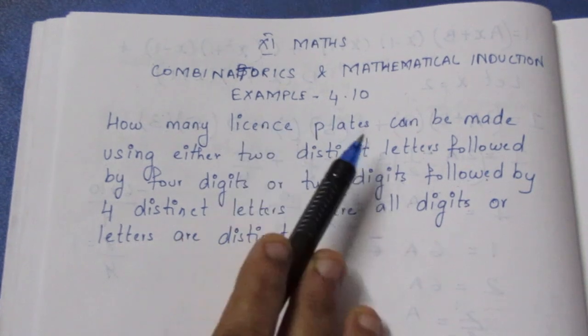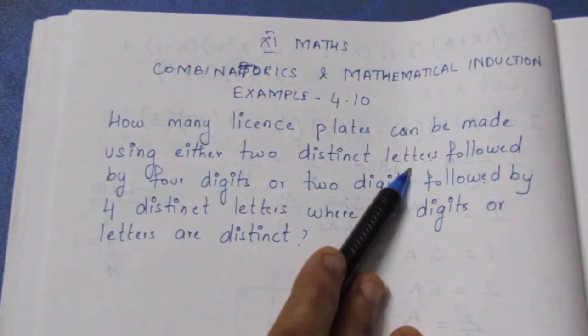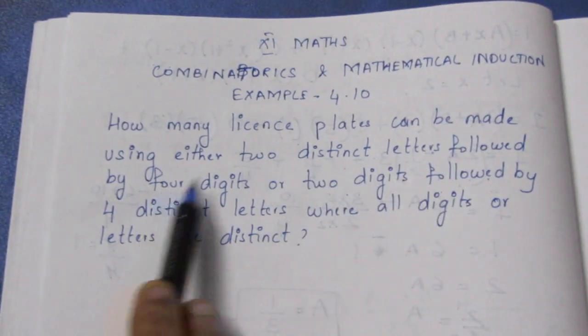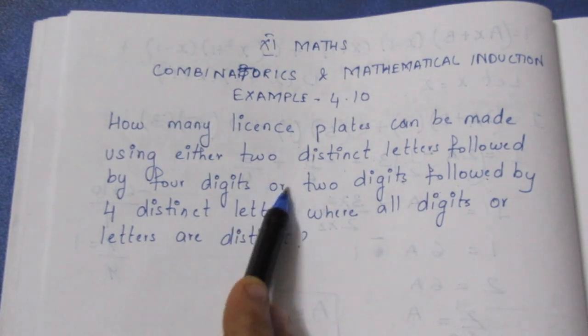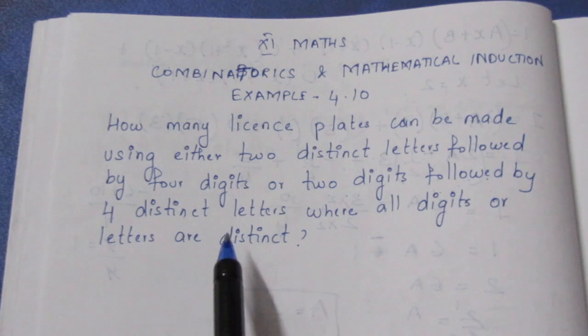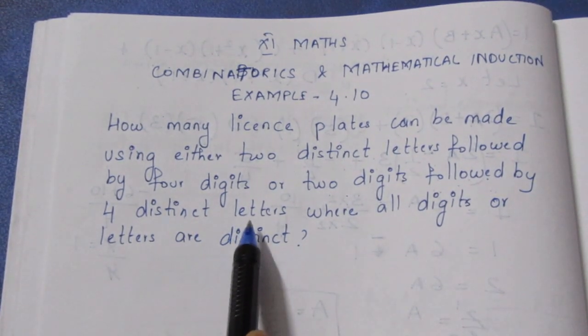Distinct means not the same. Now what do you need to form the license plate? 2 distinct letters - letters are alphabetical letters - followed by 4 digits, or 2 digits first followed by 4 distinct letters.